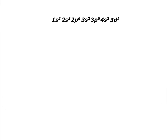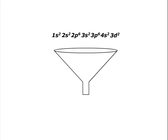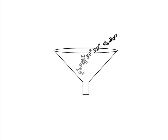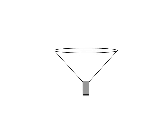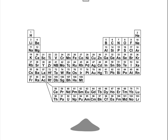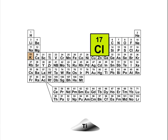The electronic configuration of an element determines its physical and chemical behavior. This simple but powerful concept is at the center of all chemistry. It explains why chlorine is a gas while potassium, only two atomic units away in the periodic table, is a metal.